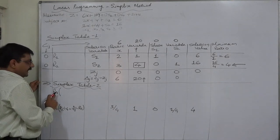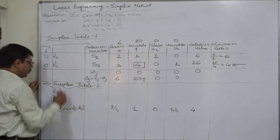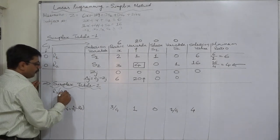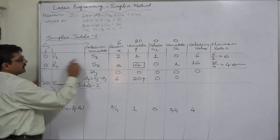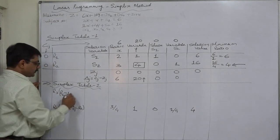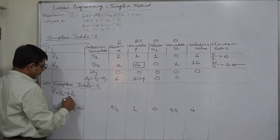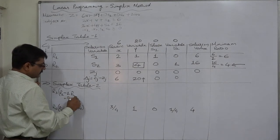Any row other than the key row, the formula will be old row r1 minus the element in the key column, that is 1, into this new replaced row r4. So ultimately r3 is r1 minus r4.